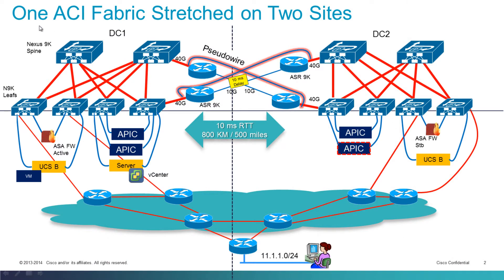Here we have one ACI fabric stretched between two data centers. We have two spine switches in data center one, two spine switches in data center two, and four leaf switches in each data center. One of the innovations of this demonstration is that the ACI fabric is stretched using Ethernet over MPLS pseudowire. Between leaf 4, we have a 40-gig port coming into an ASR 9K.